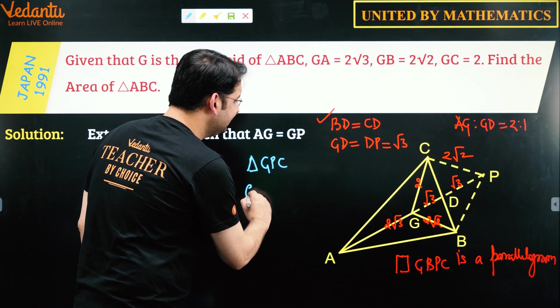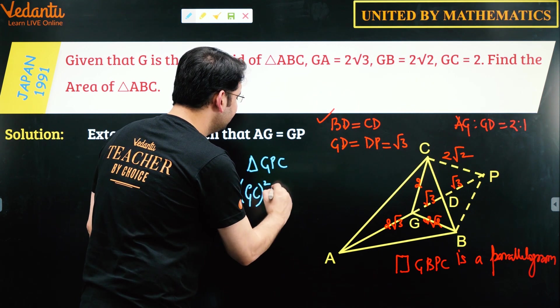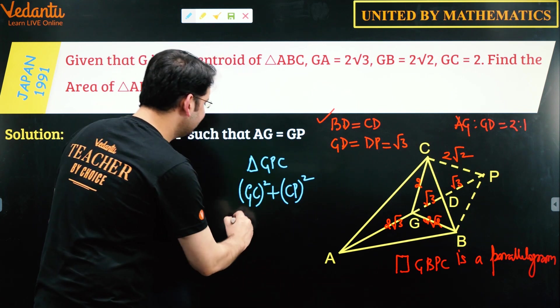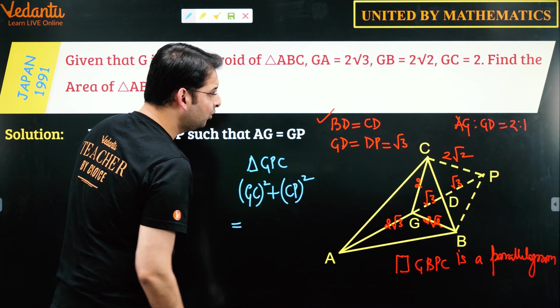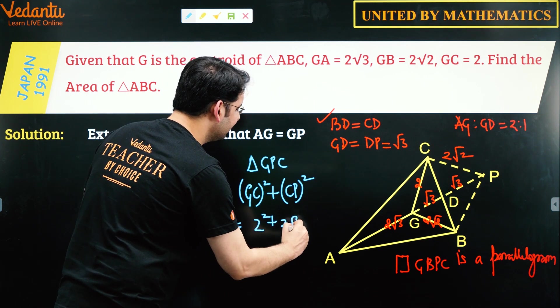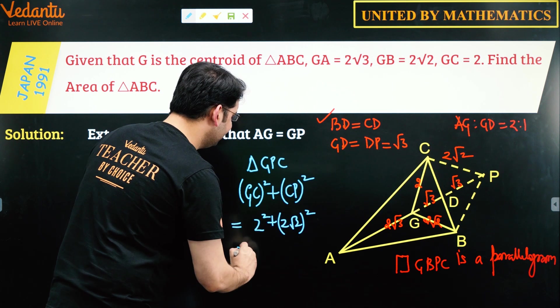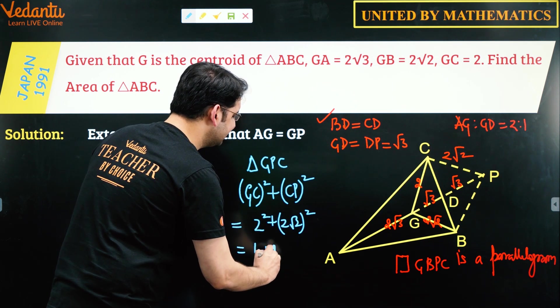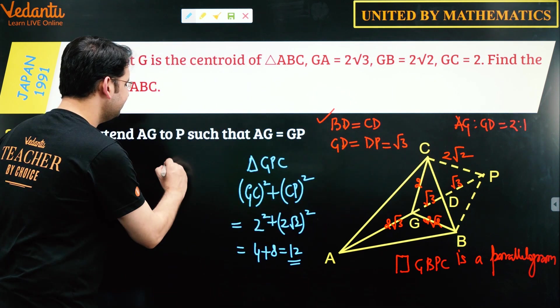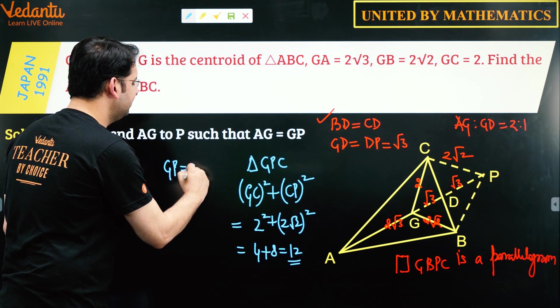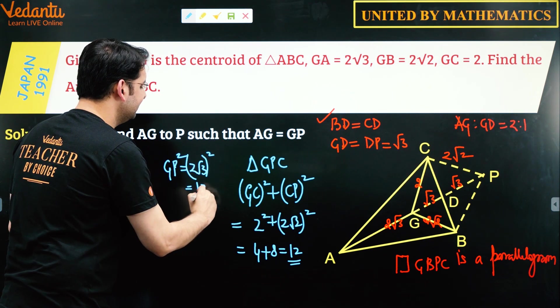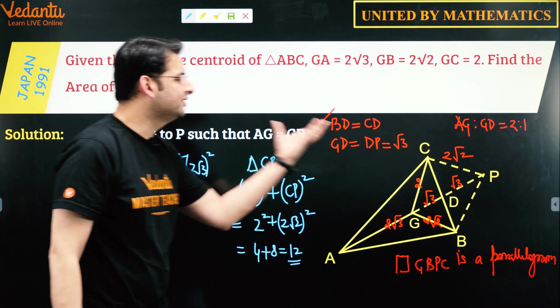can I say if I look at GC² plus CP²—let's see what this amounts to be. So GC² is 2² and CP² is (2√2)², and this is coming out to be 4 plus 8 which is 12, and if we observe that GP² is actually (2√3)² and this is also 12. So what does this tell us about this triangle?